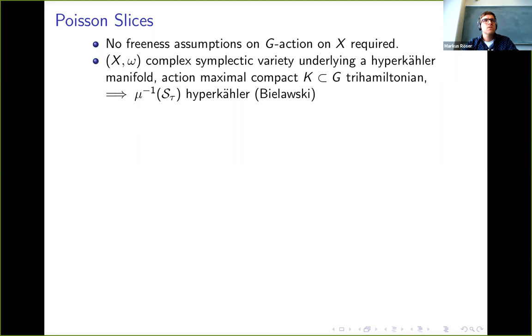In the hyper-Kähler situation, if we start with a holomorphic symplectic manifold or algebraic symplectic variety coming from a hyper-Kähler manifold and the maximal compact subgroup of G acts in a tri-Hamiltonian fashion, then in fact, there's a hyper-Kähler structure on this slice. In this context, the construction was already studied by Bielawski as a way to produce new hyper-Kähler manifolds out of old ones.